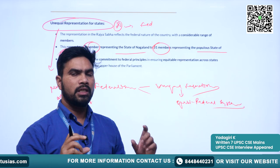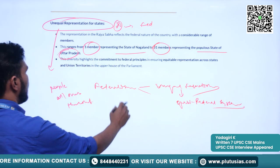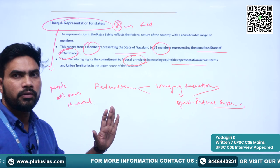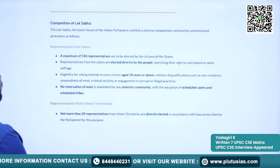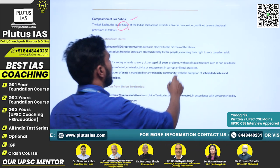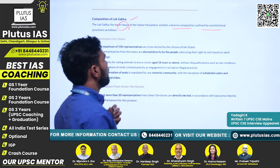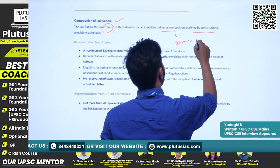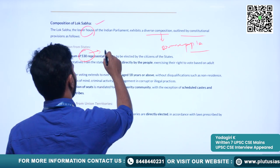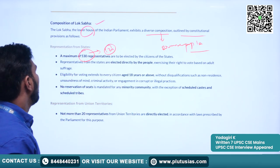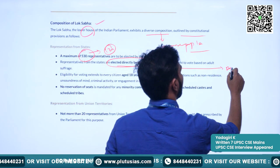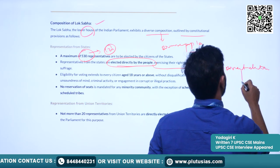Unequal representation exists for states in the Rajya Sabha. This highlights the commitment to federal principles in ensuring equitable representation across states and union territories in the upper house. Now we will understand the composition of Lok Sabha. The Constitution mandated a maximum of 530 members in the Lok Sabha, elected directly by the people. Here the members of the Lok Sabha are elected directly through the method of adult suffrage — adults who are 18 years of age and above are eligible to vote.